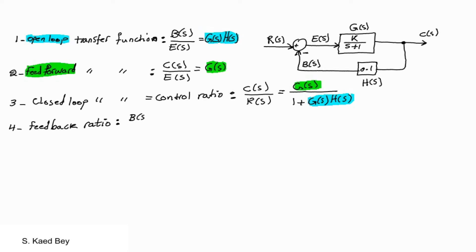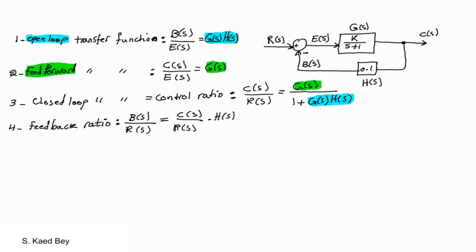The fourth definition is the feedback ratio, which is defined as B over R. B can be replaced by CH. And looking at the definition of the closed-loop transfer function, we can simply replace C over R. Therefore, the feedback ratio is equal to GH over 1 plus GH.